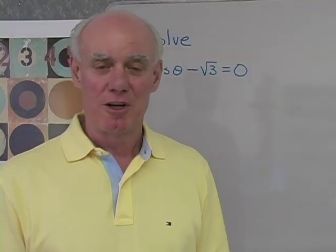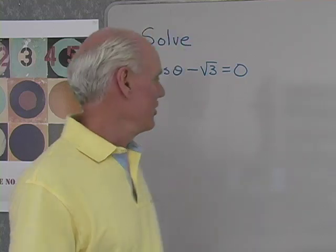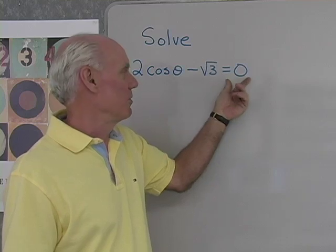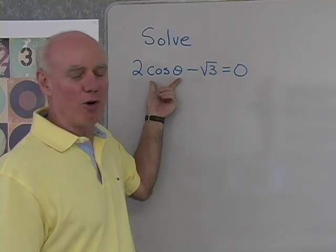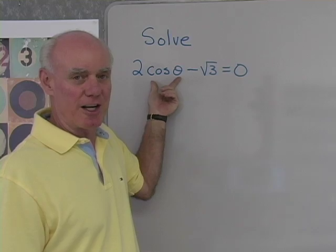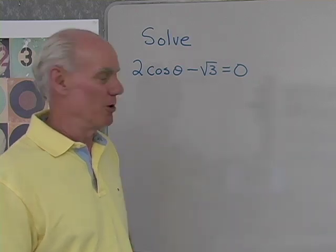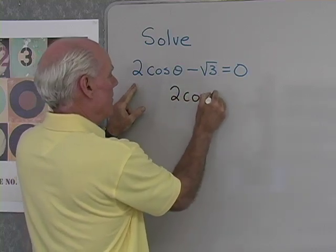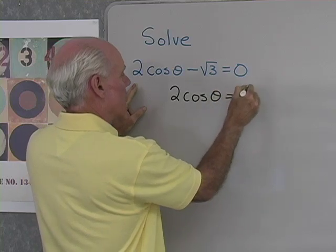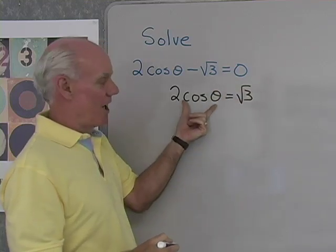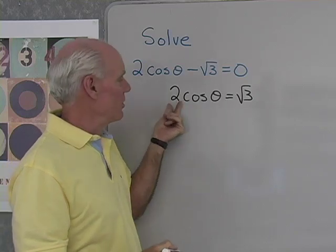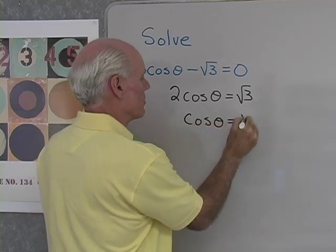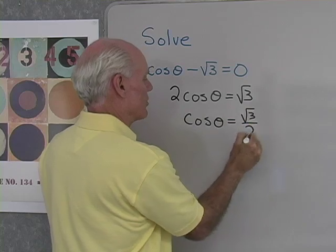We want to start our work with solving trigonometric equations. Let's solve 2 cosine theta minus square root 3 equals 0. We're going to treat the whole expression cosine theta as if it was just a single variable. I'll start by adding square root 3 to both sides, giving us 2 cosine theta equals square root 3. Then I'll divide both sides by 2, so cosine theta is equal to square root 3 over 2.